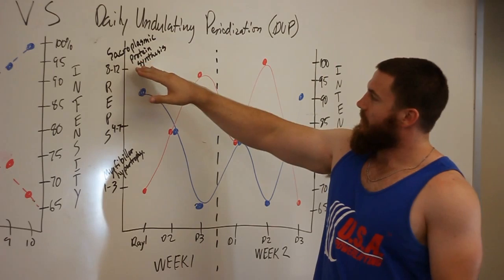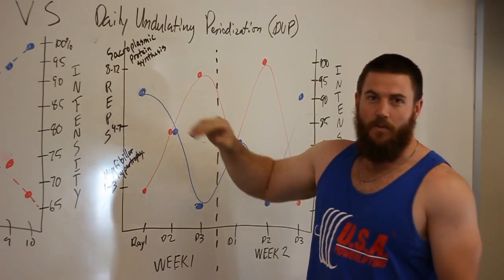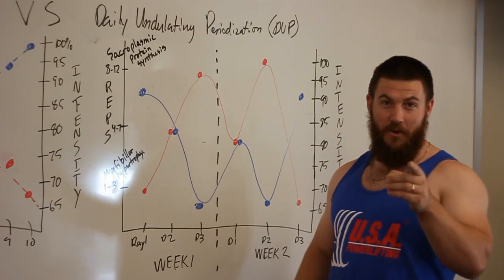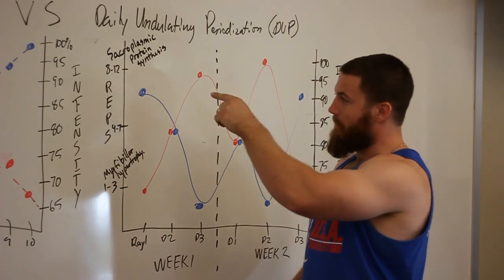You get the sarcoplasmic protein synthesis from the 8 to 12 rep range. Yeah I said that right. I don't know what it means but I know what it looks like. It looks like you're getting bigger and stronger.